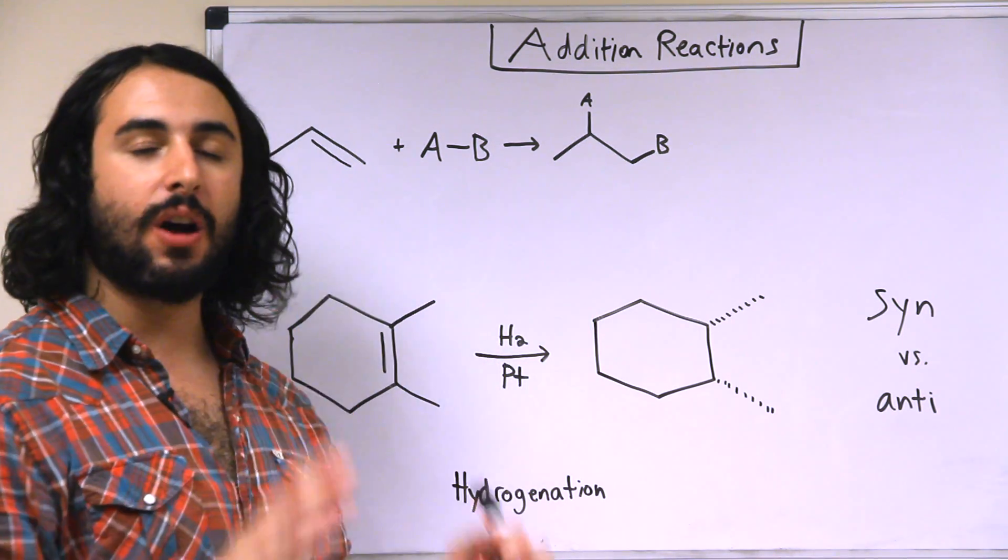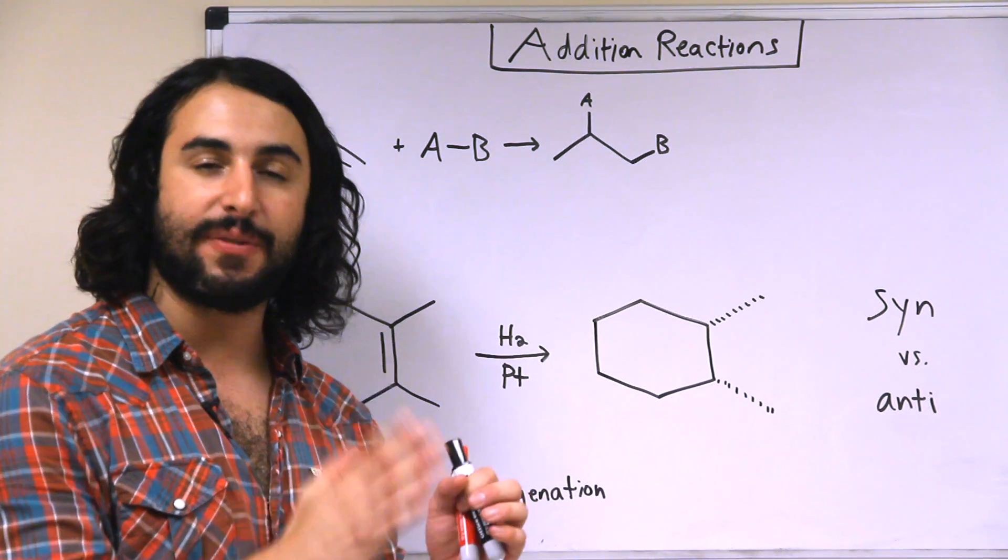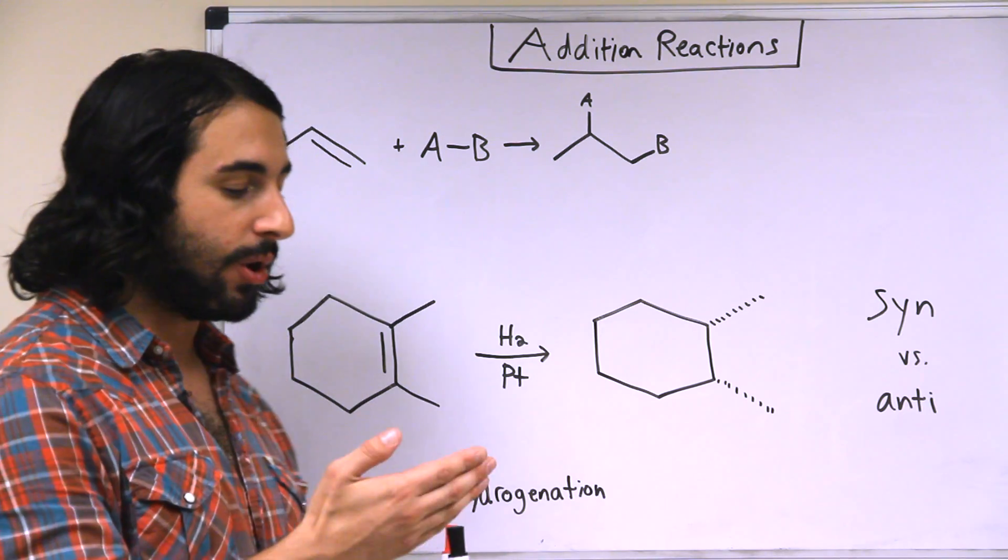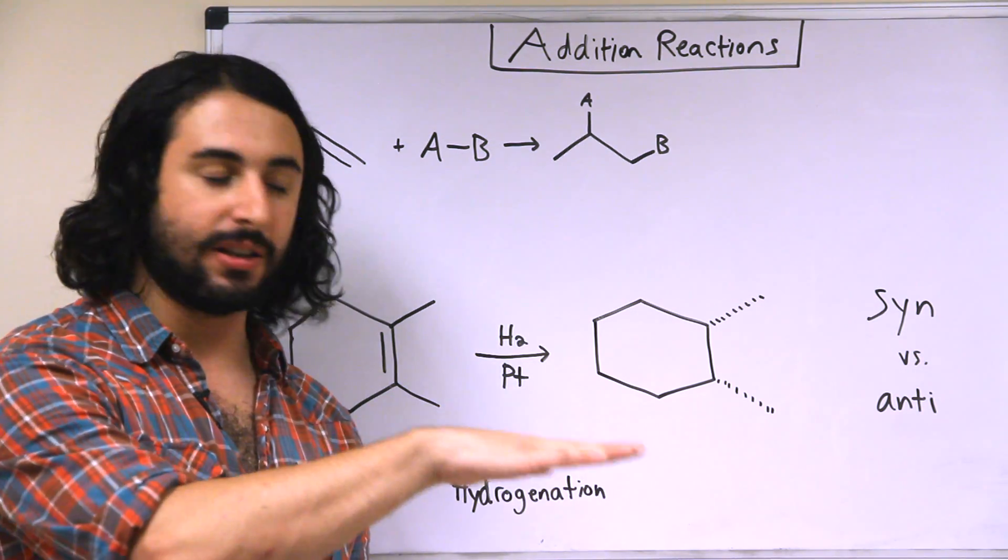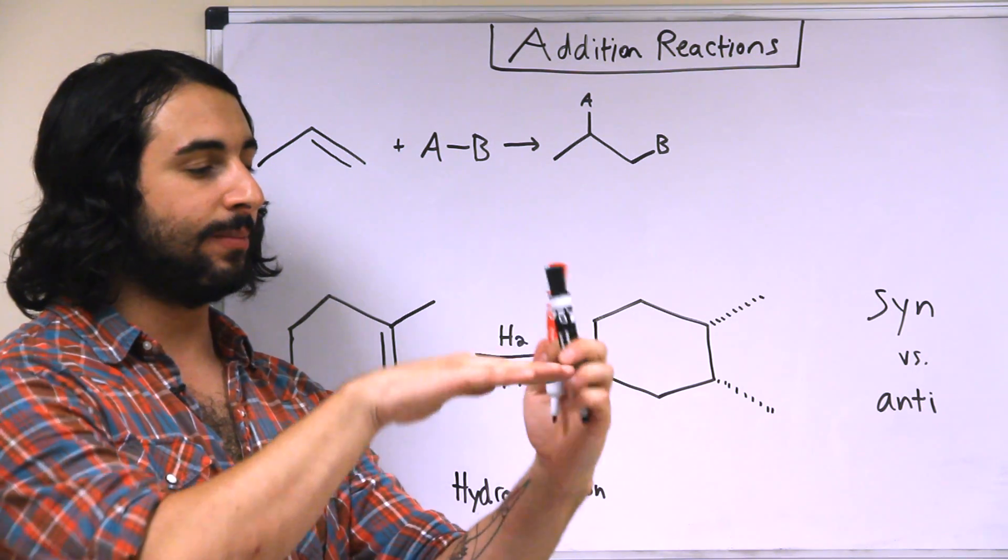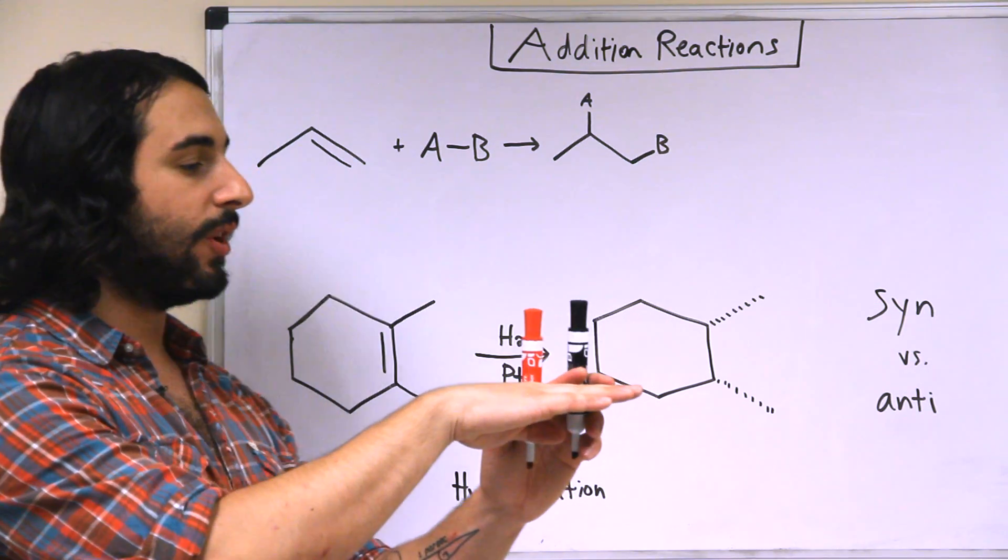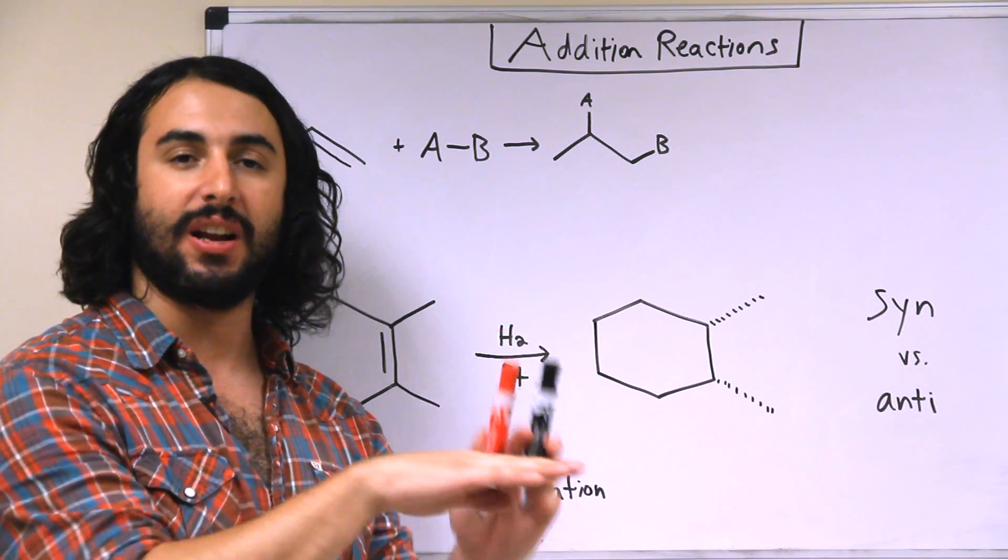In this case, because this is heterogeneous catalysis, this means that the catalyst is in a different phase than the substrate. It's like a surface that the substrate will have to approach, and then hydrogen atoms which are sort of sticking out of the top of the material are going to be added to the substrate on the same side.